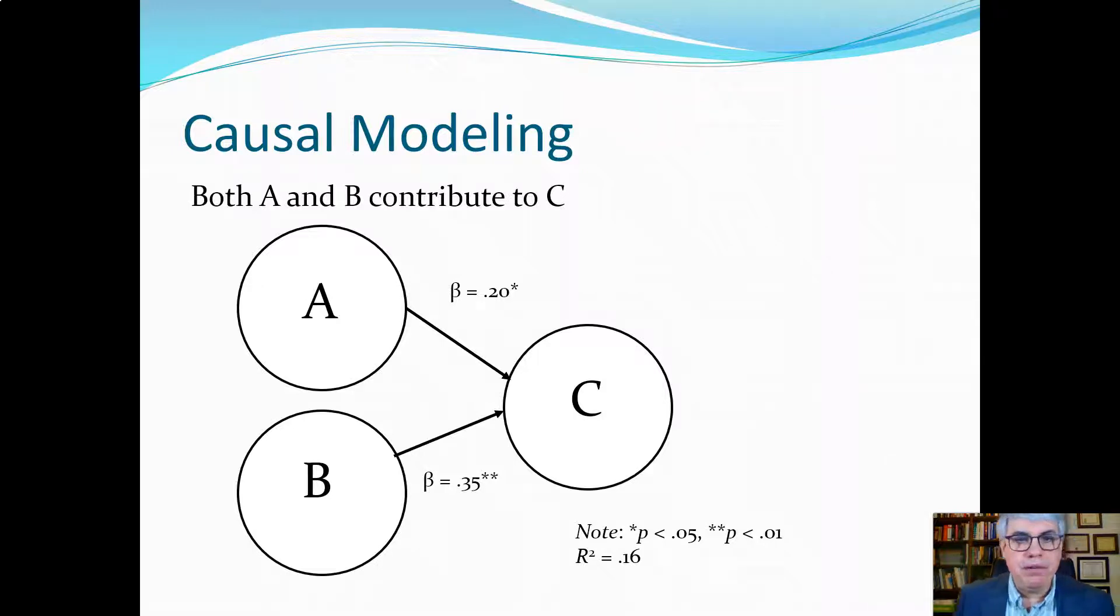Now we could also put on either betas or b's to show what the coefficients are. Remember if we have a b, that's a coefficient and has units, and for each point A goes up, C would go up so many points also if B was held constant. Here we've got betas which are a lot like correlations and so they have intuitively the same meaning of correlation.